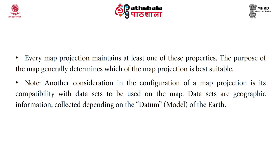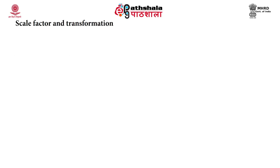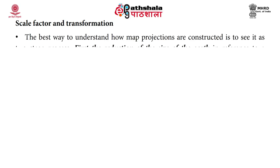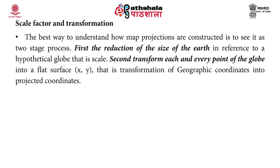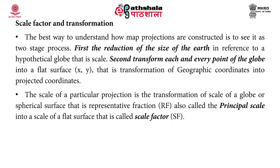Another consideration in map projection configuration is its compatibility with the data set to be used on the map. Data sets are geographic information collected depending on the datum model of the Earth. Now let us look into scale factor and transformation. The best way to understand how map projections are constructed is as a two-stage process: first, the reduction of the size of the Earth in reference to a hypothetical globe — that is the scale — and second, the transformation of each point of the globe into a flat surface X and Y, that is the transformation of geographic coordinates into projected coordinates. The scale of a projection is the transformation of the scale of the globe, known as the representative fraction (RF) or principal scale, into the scale of the flat surface, known as the scale factor (SF).